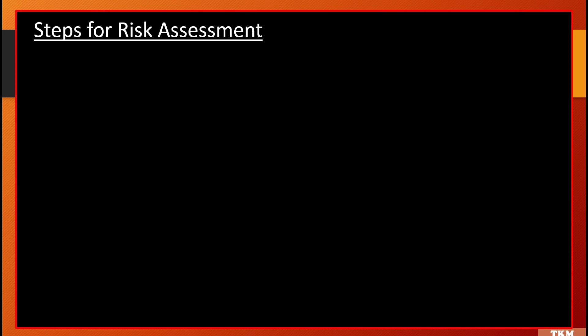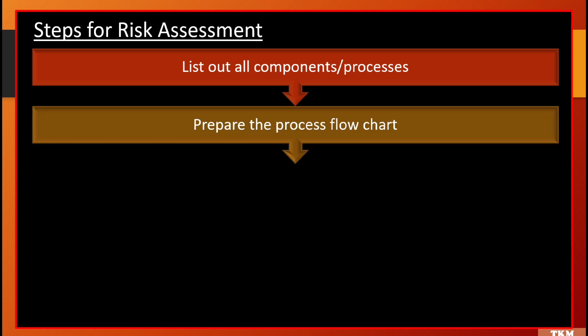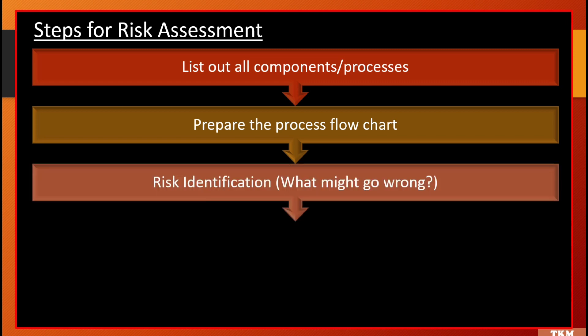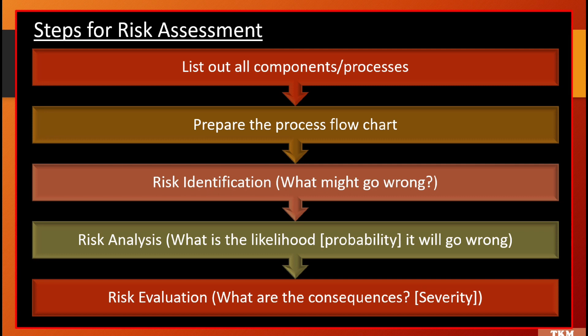The various steps involved in risk assessment are: first, list out all the components or processes; then prepare a process flow chart; then identify what might go wrong — this is called risk identification; then determine the likelihood, meaning the probability that it will go wrong — this is called risk analysis; and then determine what are the consequences, that is the severity — this comes under risk evaluation.